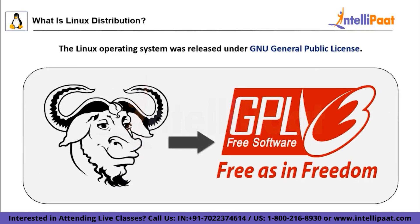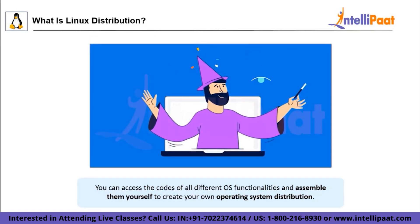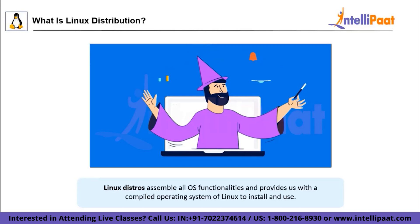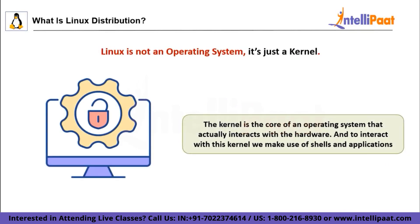The Linux operating system was released under the GNU General Public License, and hence the different parts of Linux are designed and developed by different organizations. What I mean by different parts here is the core components of the operating system such as kernel, shell, utilities, X server, system environment, graphical programs, etc. And if you want, you can access the codes of all these different parts and assemble them yourself to create your own operating system distribution. But it's not an easy task. From here, Linux distributions come into picture — they assemble all these parts for us and give us a compiled operating system of Linux to install and use.